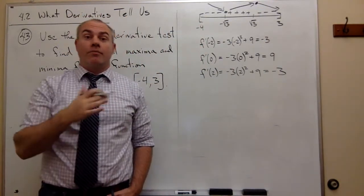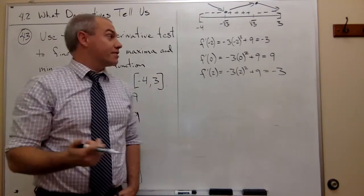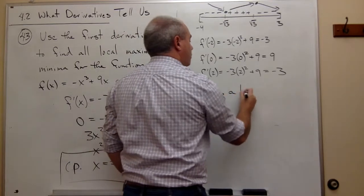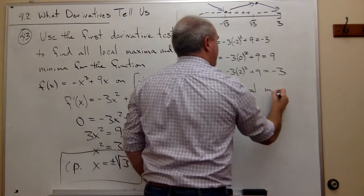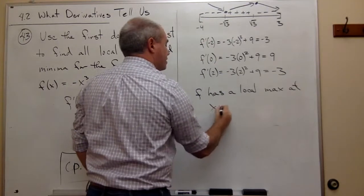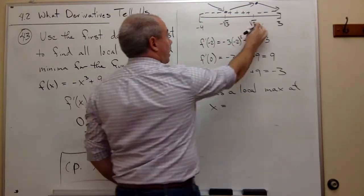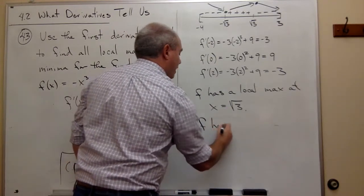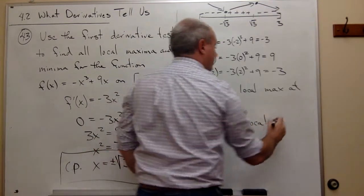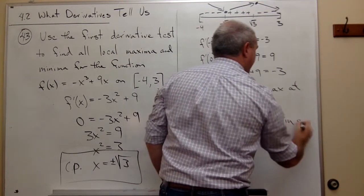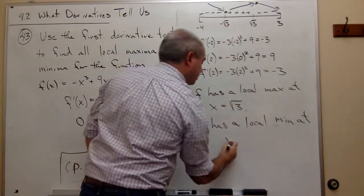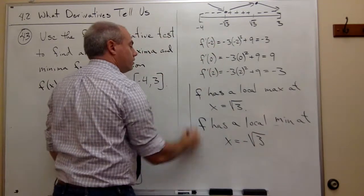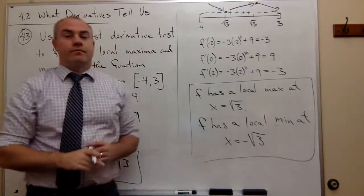So I found my local max and mins using the first derivative test. And now I can write down my answer. f has a local max at x = √3, and f has a local minimum at x = -√3. And we're done.